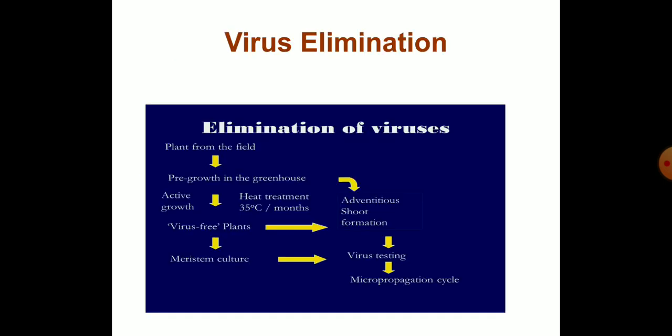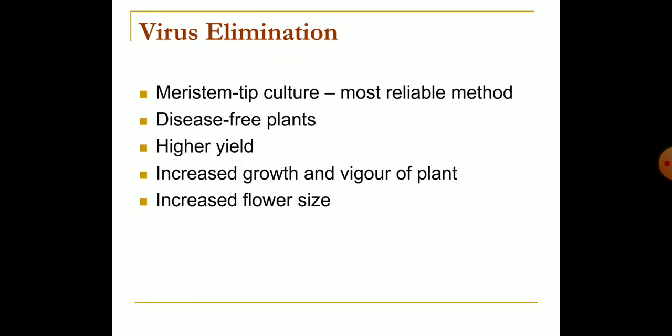Virus elimination: Tissue culture technique can be utilized for production of virus free plants, either through meristem culture or chemotherapy. Meristem tip culture is the most reliable method for virus and other pathogen elimination. Virus free plants exhibit increased growth and vigor of plants, higher yield, and increased flower size.